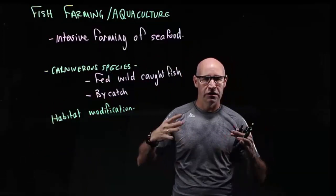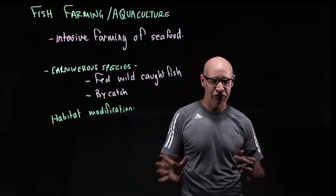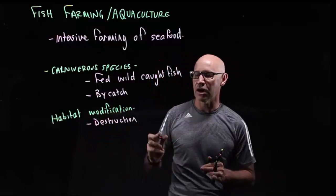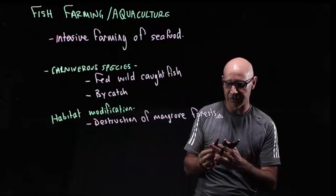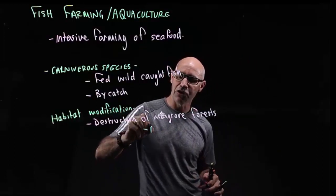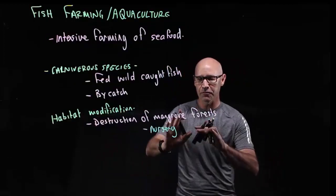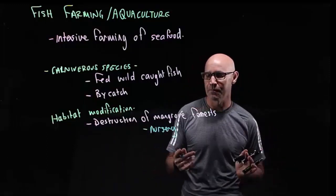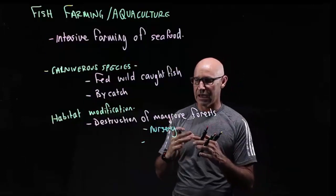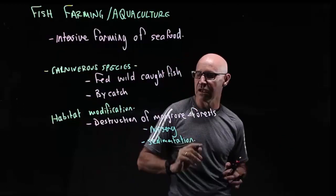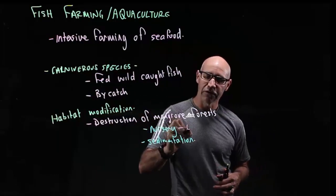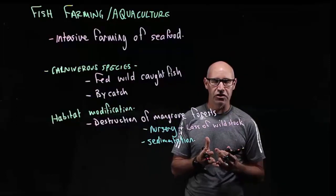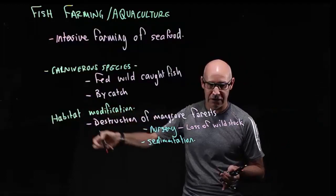The next impact is habitat modification. Aquaculture fish farms are usually created in estuaries and frequently require the destruction of natural habitat, particularly mangrove forests. Mangroves are incredibly important to ecosystems because they serve as nurseries for many fish species. If mangroves are removed, it impacts the development of wild fish species. They also retain soil, so removing mangroves leads to sedimentation. This results in a loss of wild fish stock because they can't spawn or develop from juveniles into adults.